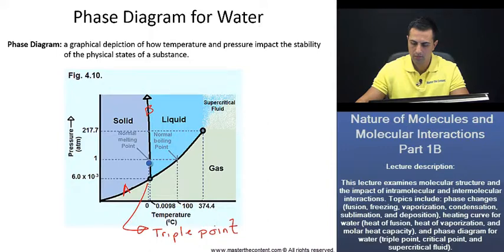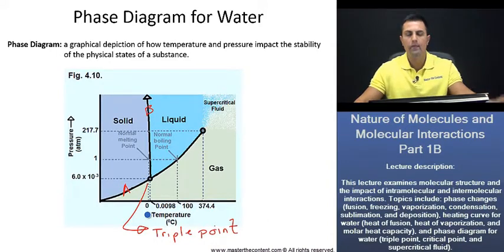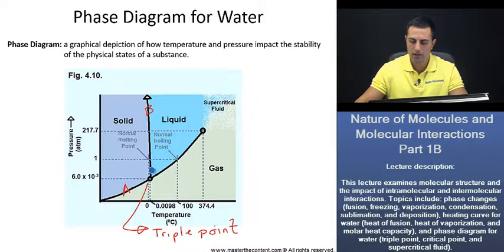And if we take a look right here, that's going to be our normal melting point at one atmosphere and zero degrees Celsius. Furthermore, most substances here are going to have a positive slope. However, for water, if we notice, this line is going to give us a negative slope. And that's due to the fact that frozen water is less dense than liquid water.